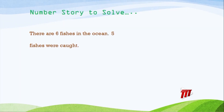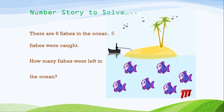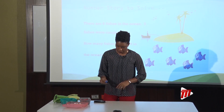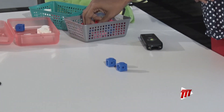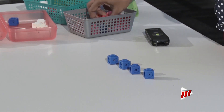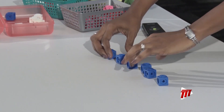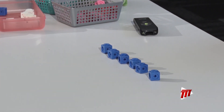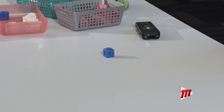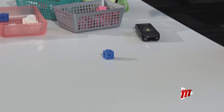I have a challenge for you. There were six fishes in the ocean. Five fishes were caught — boy, they were not lucky! How many fishes were left in the ocean? There are my six fishes. I'm going to use my counters — one, two, three, four, five, six. Six fishes in the ocean. Five were very unlucky, they got caught, so let's take them away: one, two, three, four, five. How many do we have left? One. Six take away five equals one.